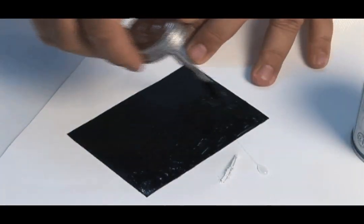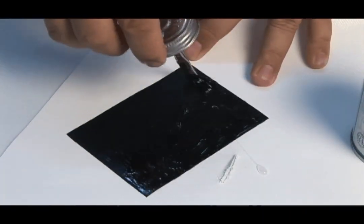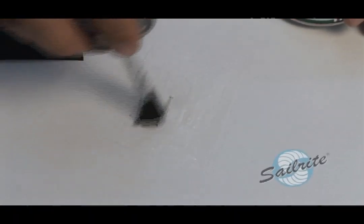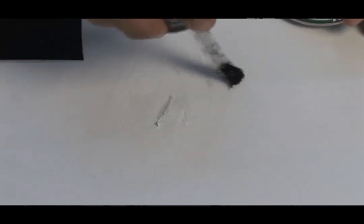One of the reasons HH-66 vinyl cement works so well is it has a tendency to melt a little bit of that vinyl material away, and that causes it to bond extremely well. Very flexible after it cures.